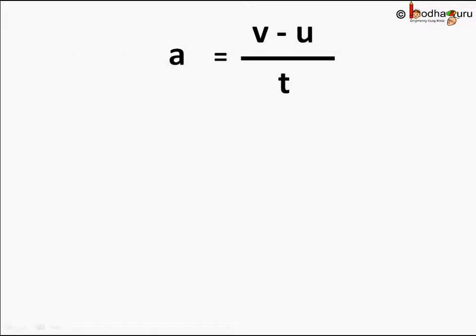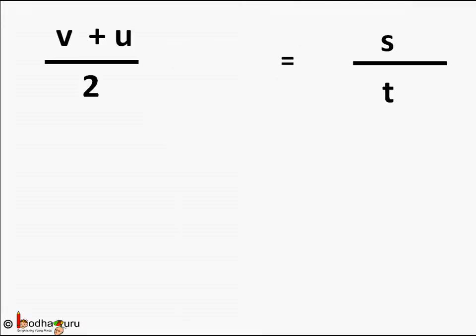Now let us derive another formula. We know acceleration a is equal to v minus u by t or t is equal to v minus u by a. And we know average velocity v plus u by 2 is equal to s by t.